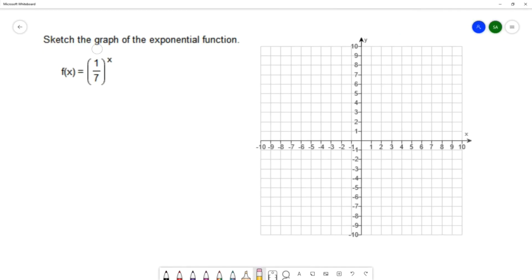In this question, we want to sketch the graph of the exponential function f(x) = (1/7)^x. We're going to sketch the graph by plotting points. The x values we'll choose are a standard set that I always default to: -2, -1, 0, 1, and 2, and we're going to substitute those into our function f(x).